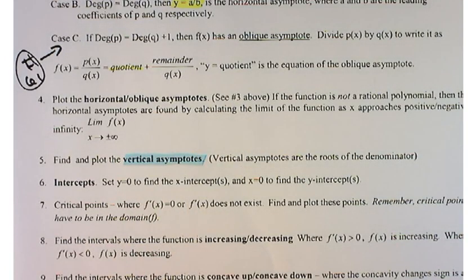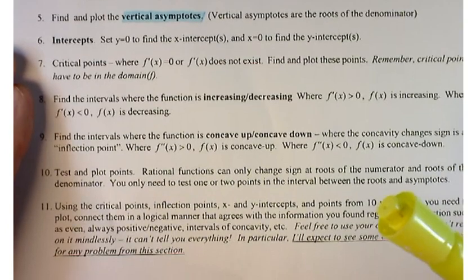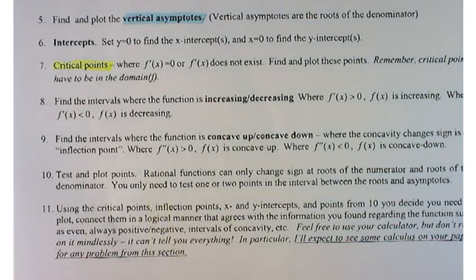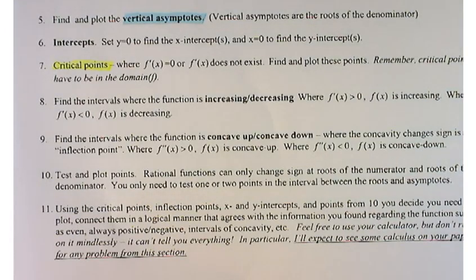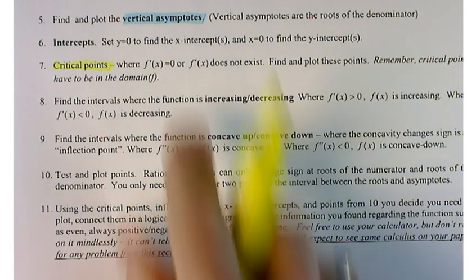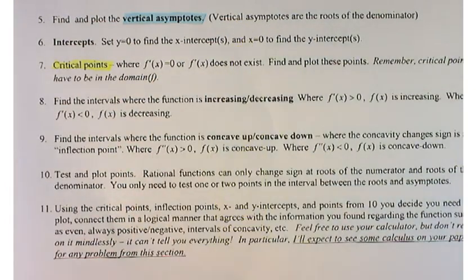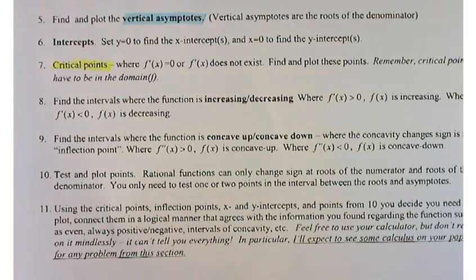Intercepts are great points to plot. Set x equal to 0 to find the y-intercept, and set y equal to 0 to find the x-intercept. Let's not forget the calculus — all those previous things can be done without calculus. But critical points: look for where the graph has critical points, that is, places where the derivative is 0 or does not exist. Make sure that these are points in the domain; if you find a critical point outside the domain, it's not a critical point.